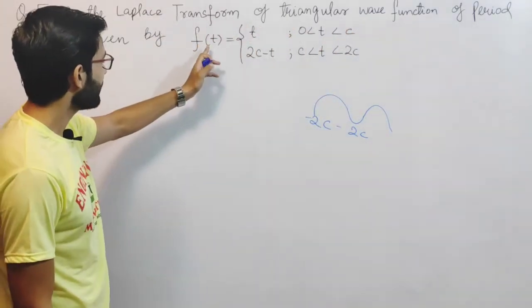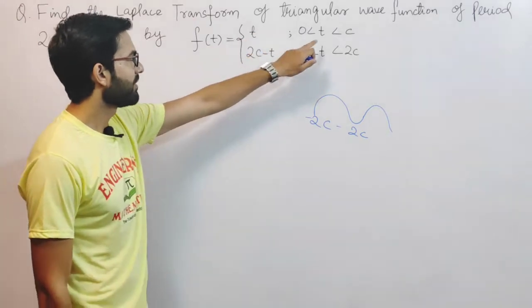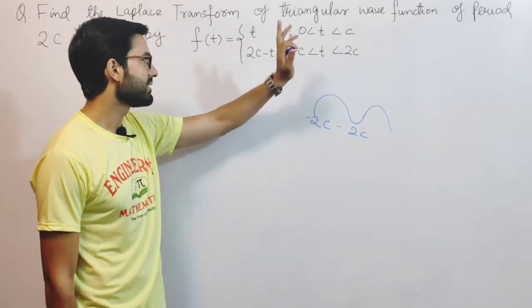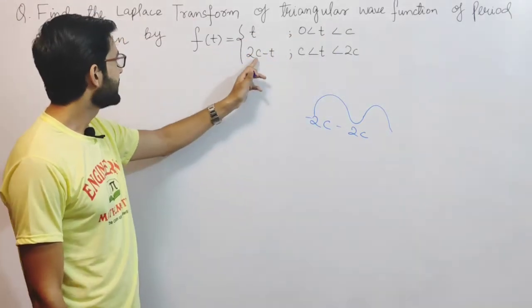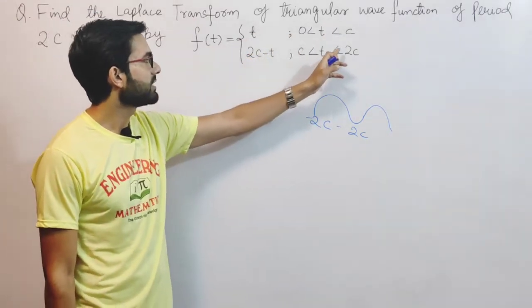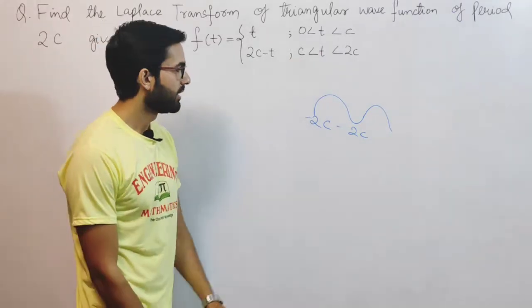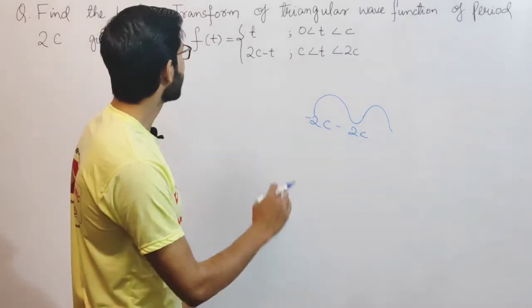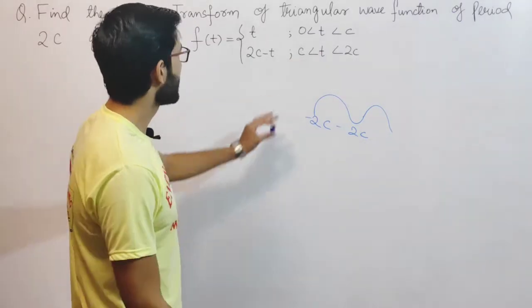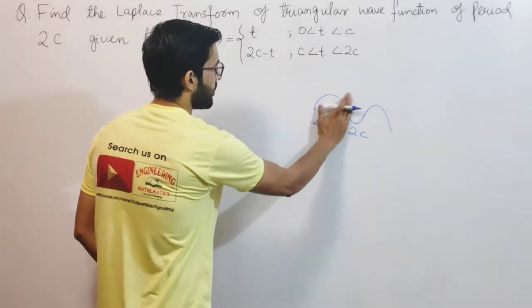The triangular wave function f(t) is defined as: f(t) = t when t is less than c, and f(t) = 2c minus t when t is greater than c. Now, let me apply the Laplace transformation formula for periodic functions, which I covered in the last video.